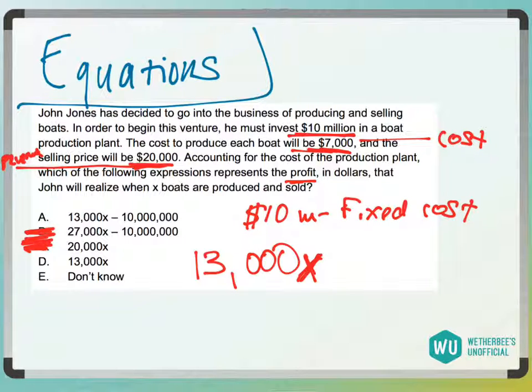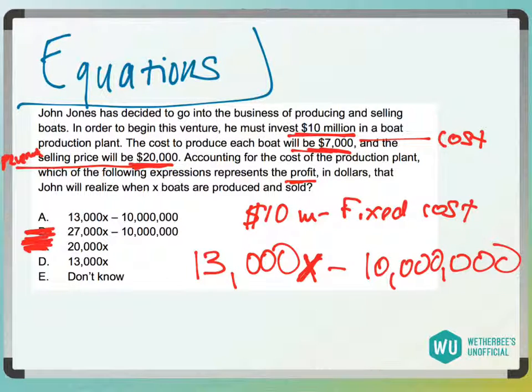But also the profit's going to be after he pays back this $10 million. So he doesn't just make $13,000 in each boat. So total profit's going to be also subtracting off this $10 million for the initial investment, that initial fixed cost. So it would be answer choice A.